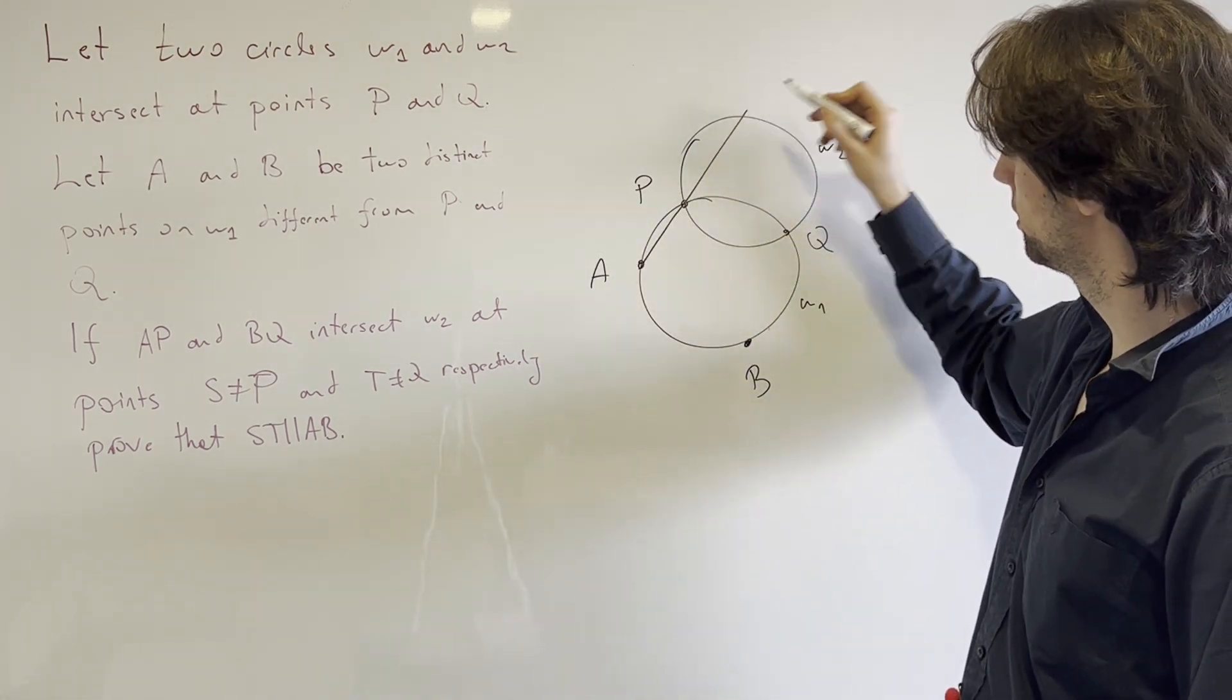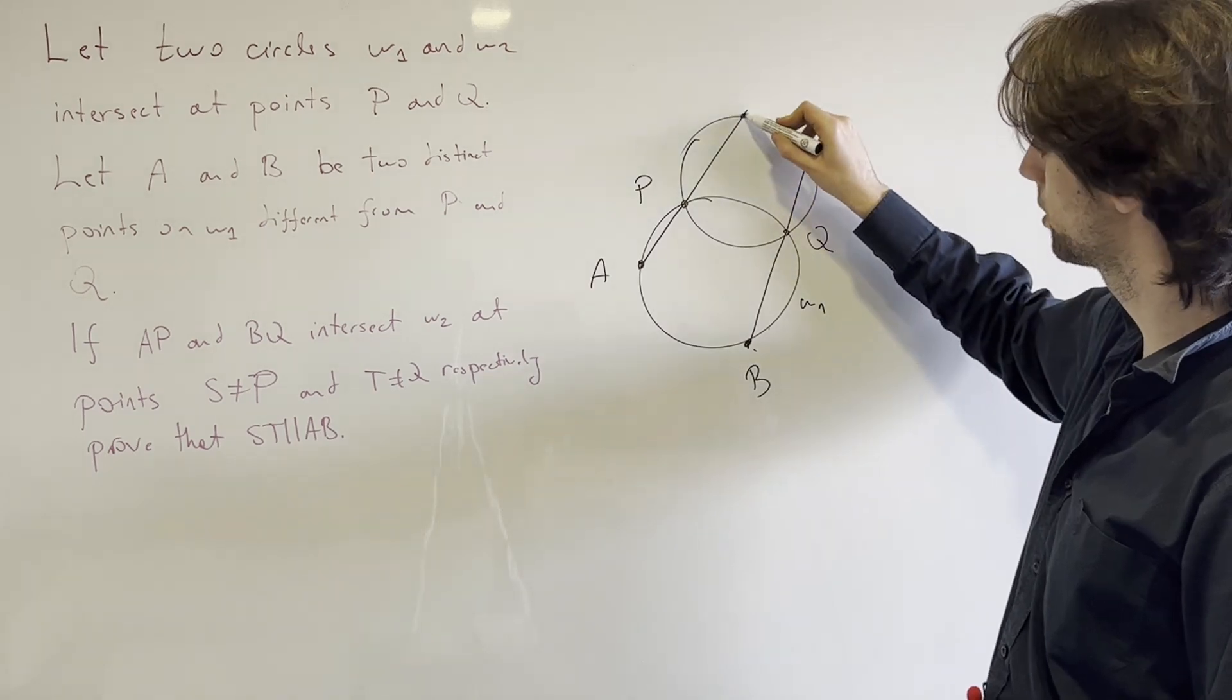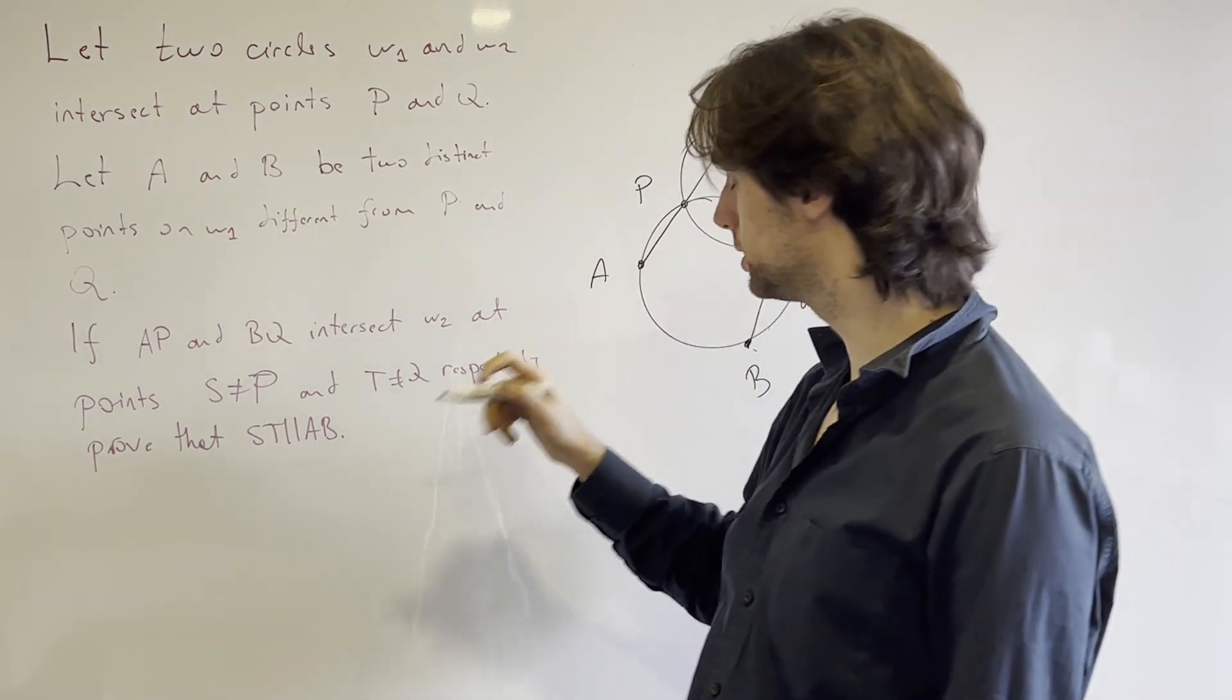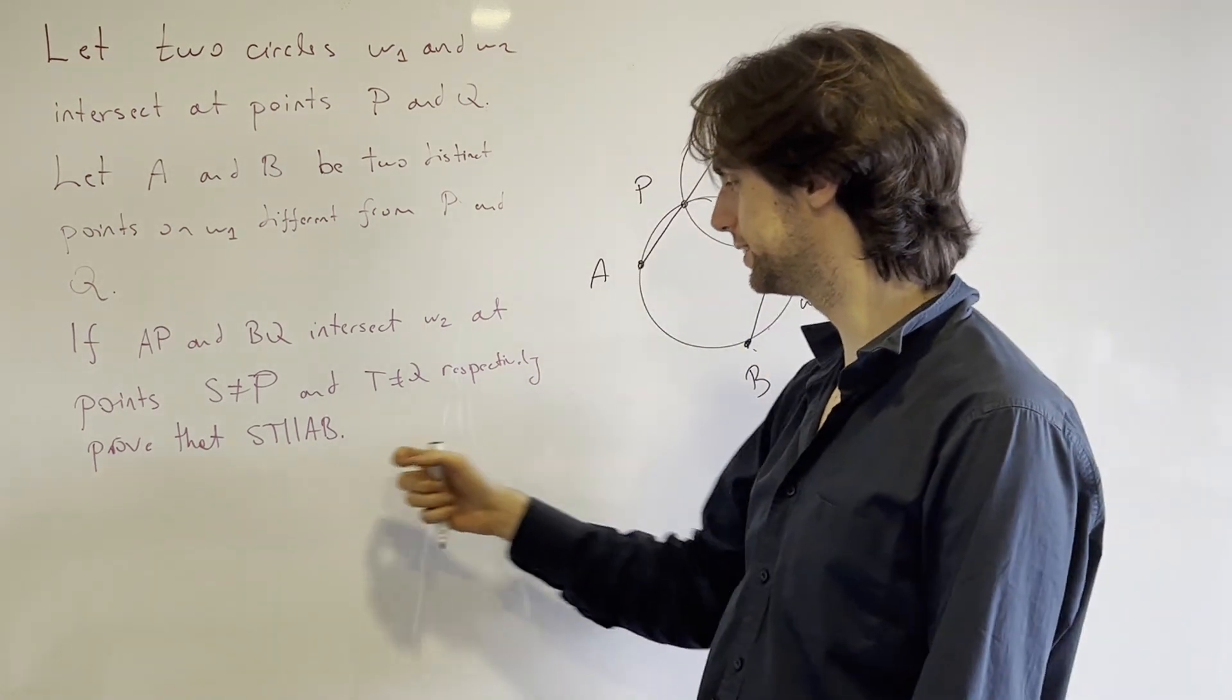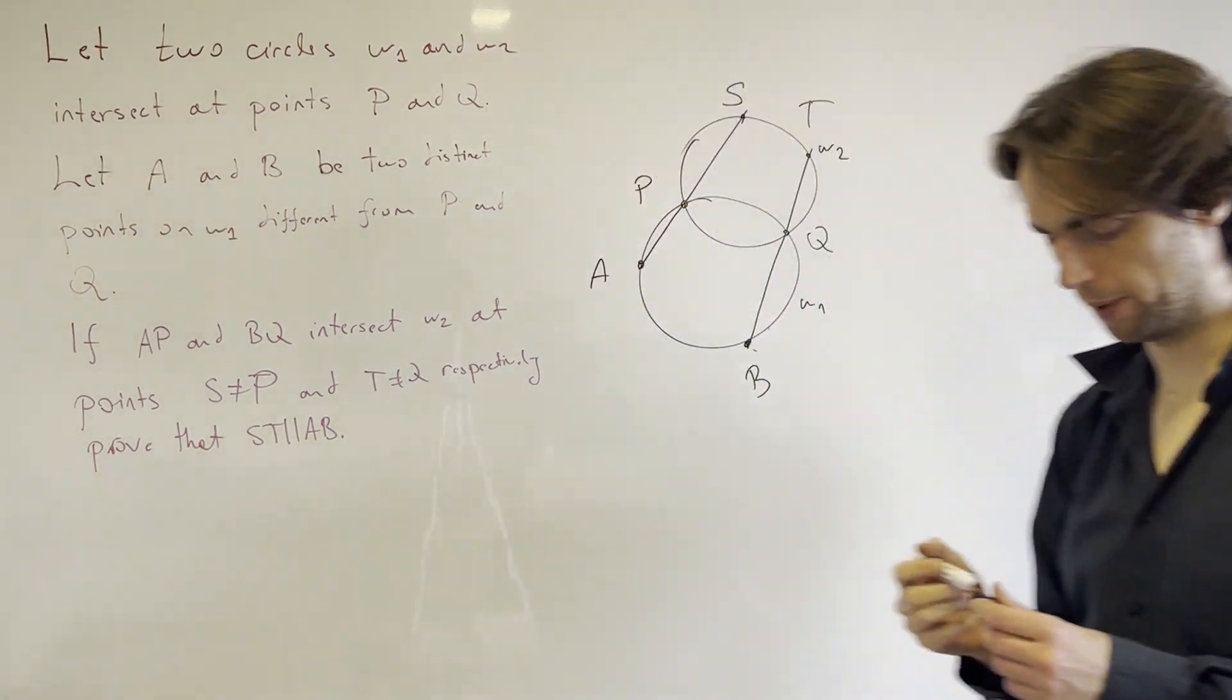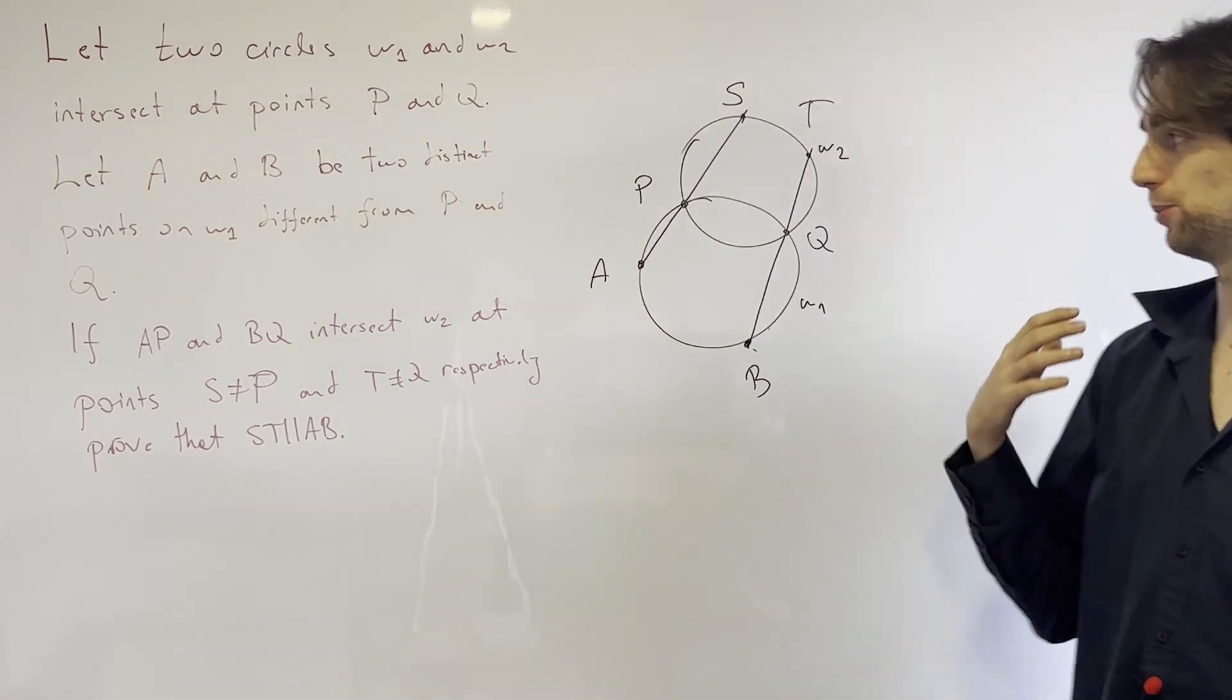And then AP and BQ intersect w2 at two other points at S and T, and we need to prove that ST and AB are parallel. So we have these two circles which intersect.